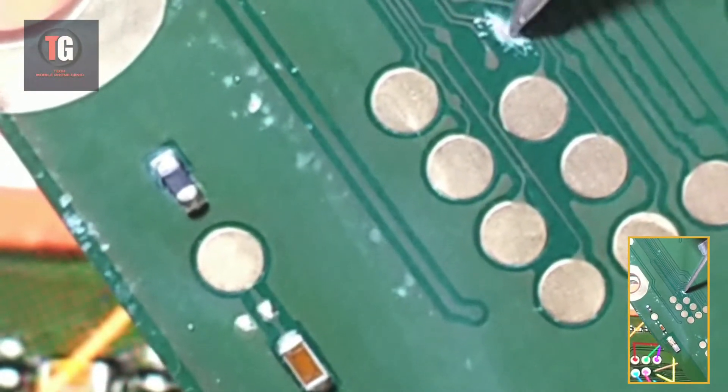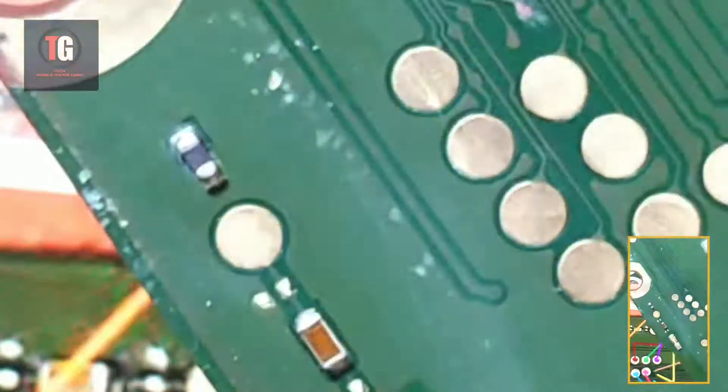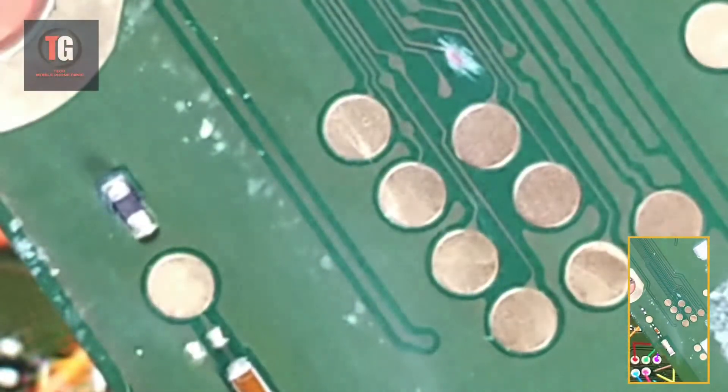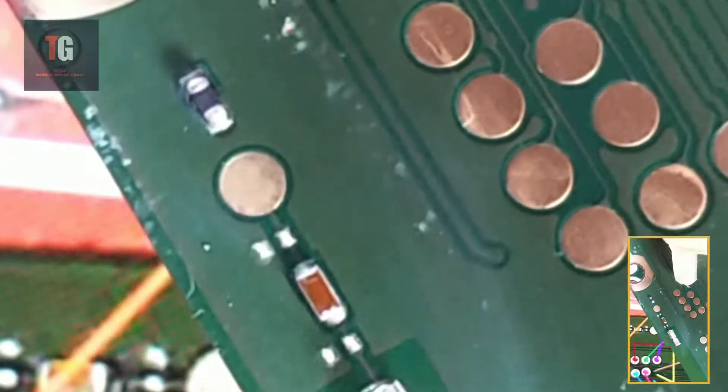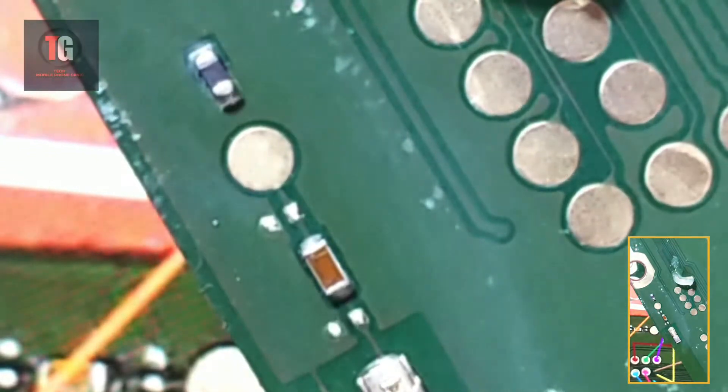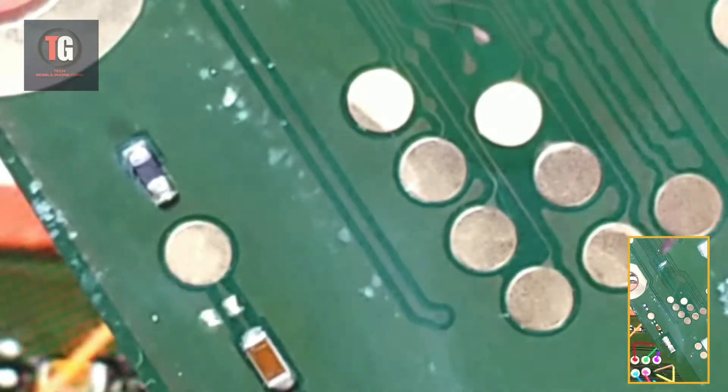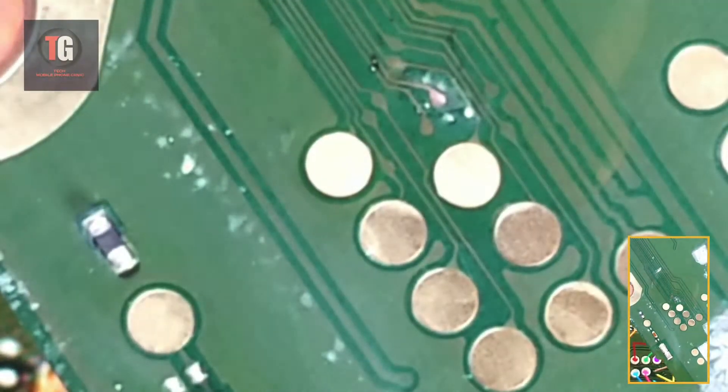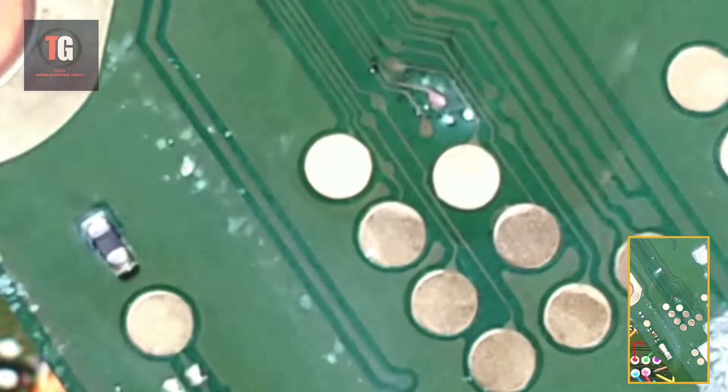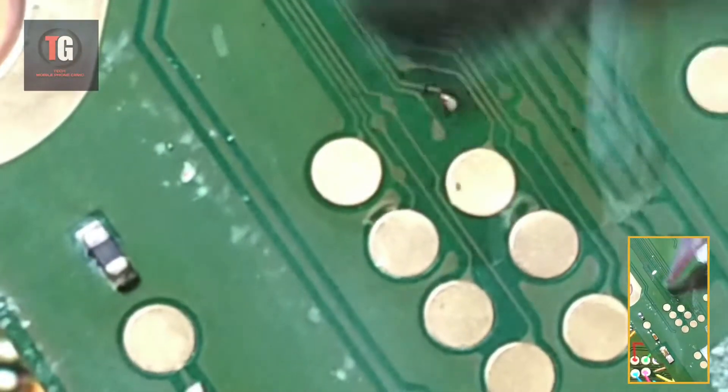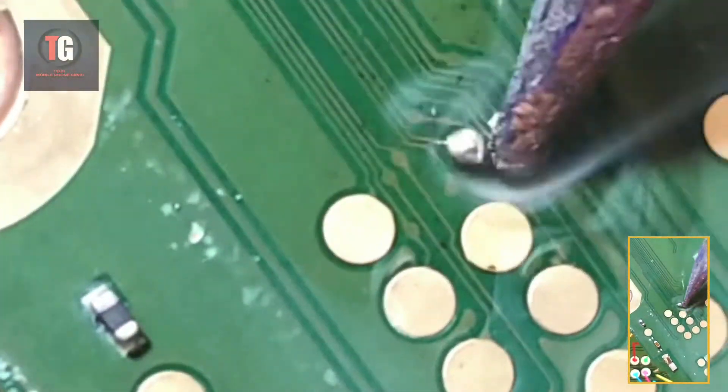Now I'll be using a schematic diagram to solve the issue. Another reason why those tracks break down is due to water damage. If there is a history of water damage on the phone, definitely those tracks are going to break down.